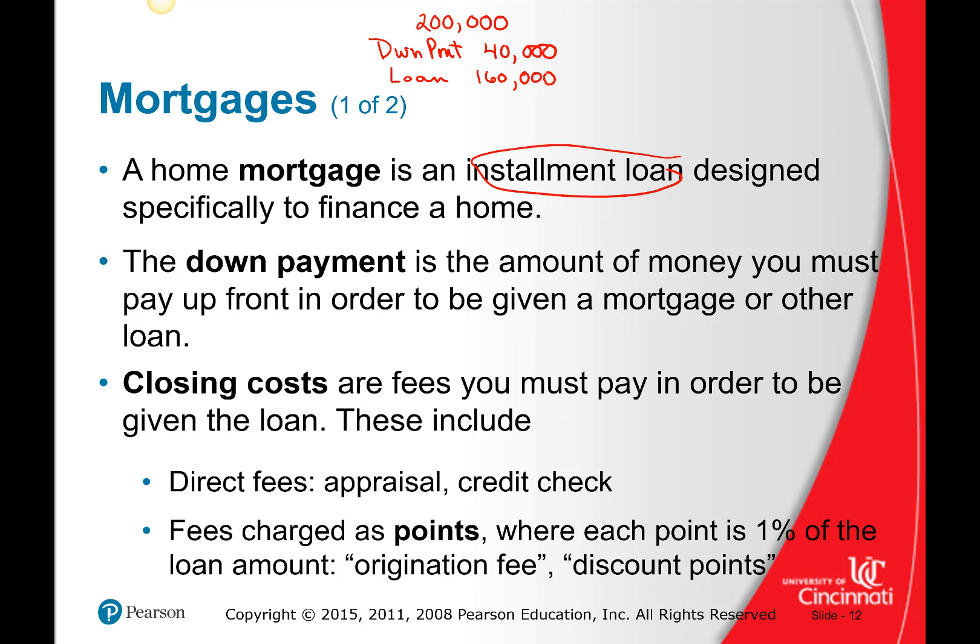In addition to the down payment of $40,000, you have closing costs. What do closing costs pay for? Inspection, appraisal, the contract fees — like the attorneys that write up the contracts. Does the loan officer get paid? Yes, they've got to eat too. There are a variety of things that go into closing costs.